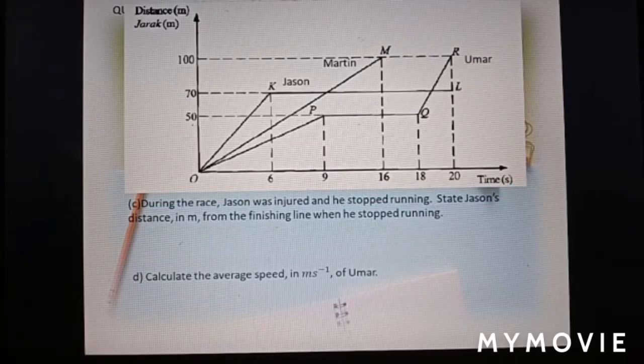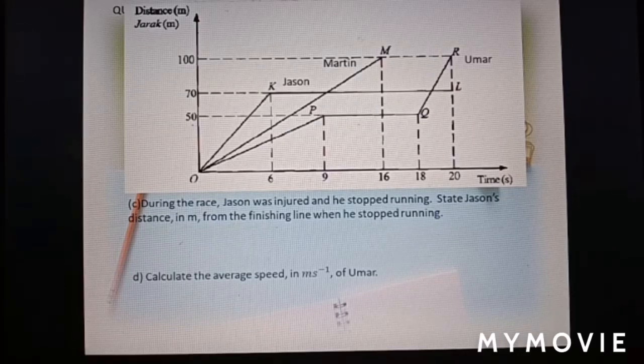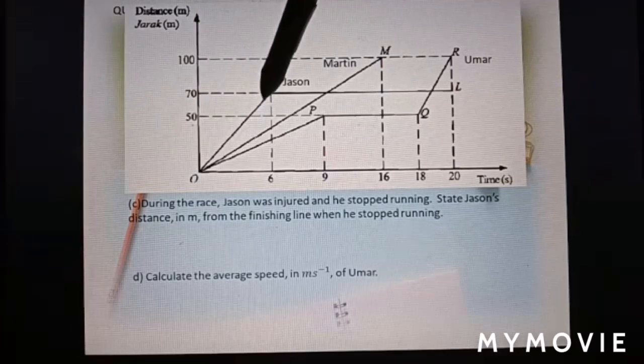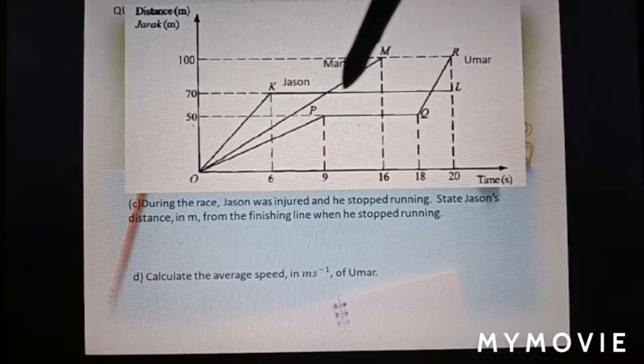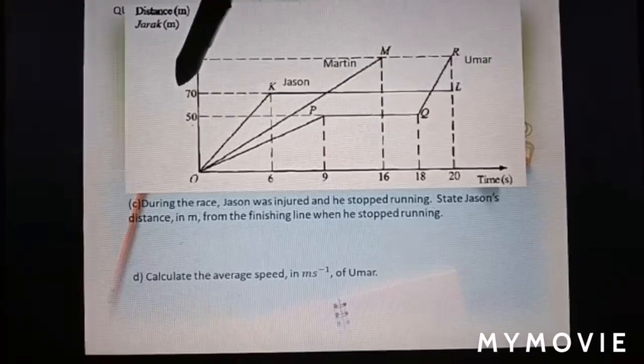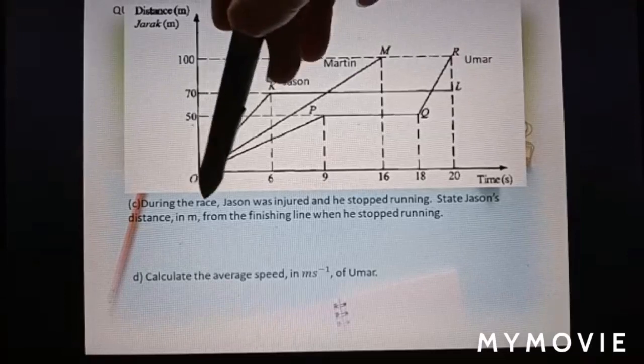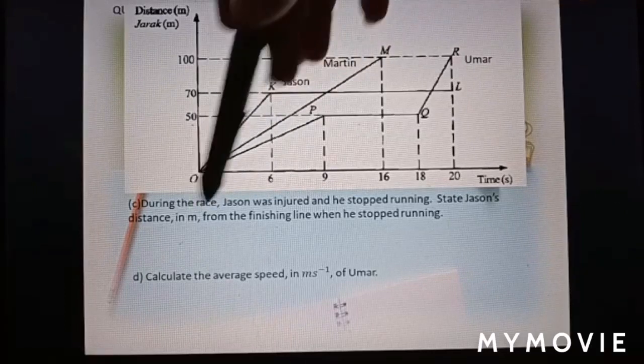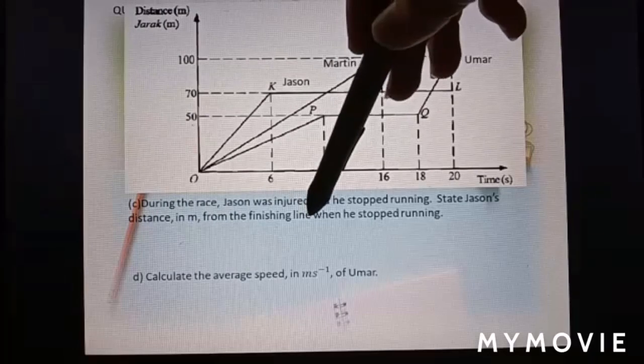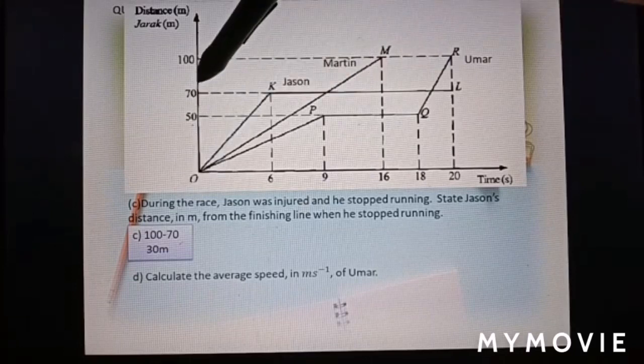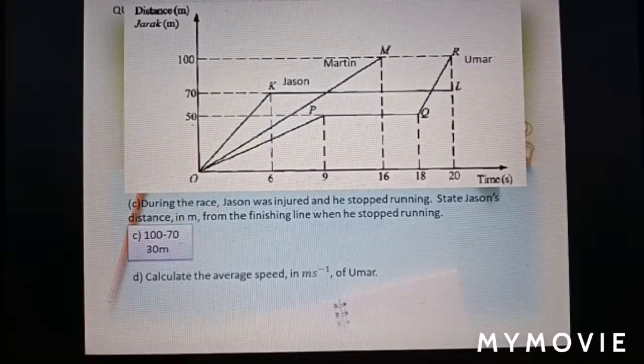Part C. During the race, Jason was injured and he stopped running. State Jason's distance in meter from the finishing line when he stopped running. So, 70 meter is from starting point. So, now the question asks, state Jason's distance in meter from the finishing line. So, from here, means 100 minus 70 equal to 30 meter.